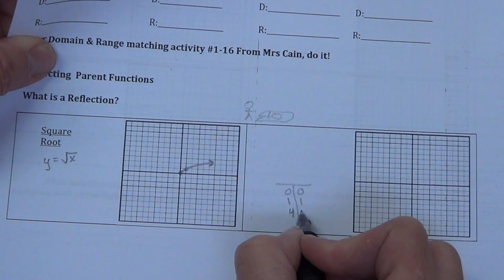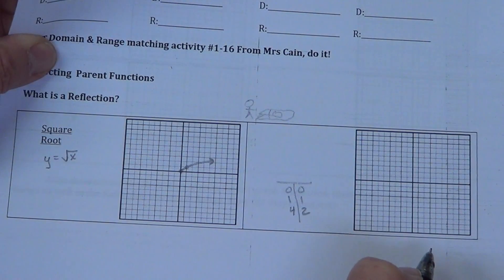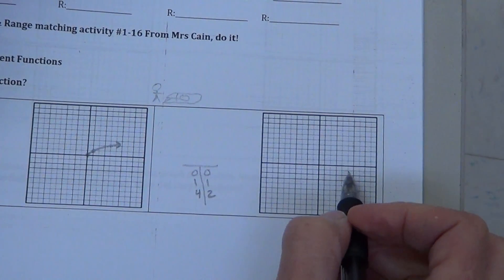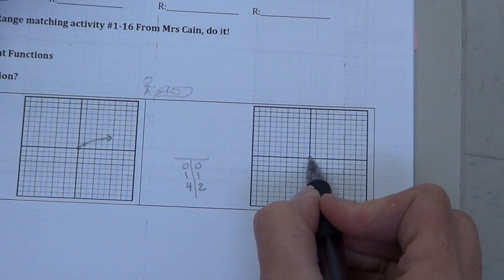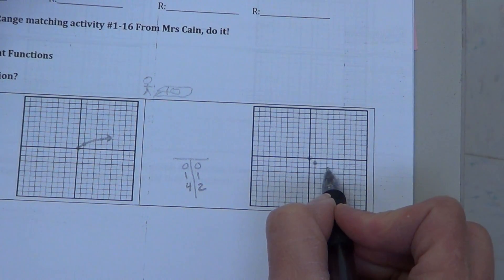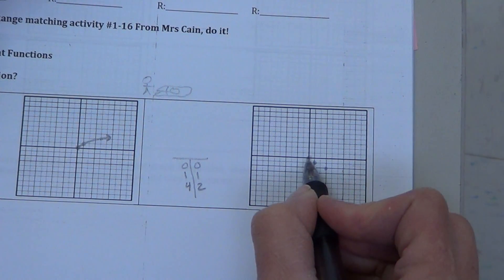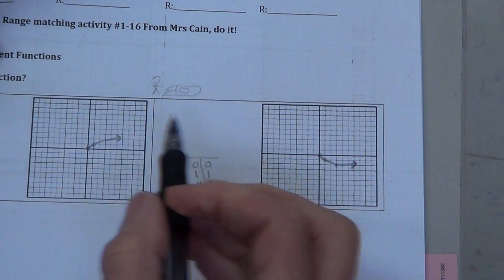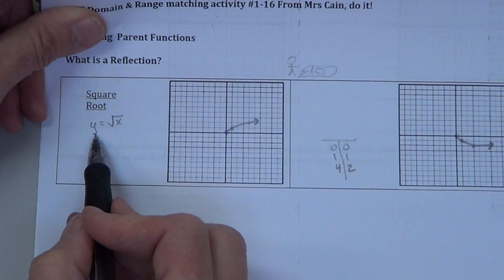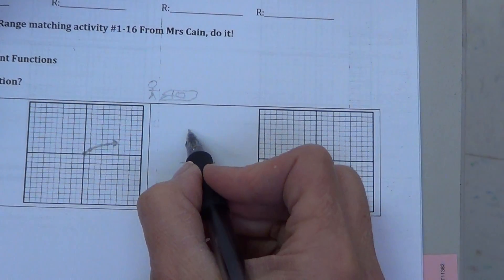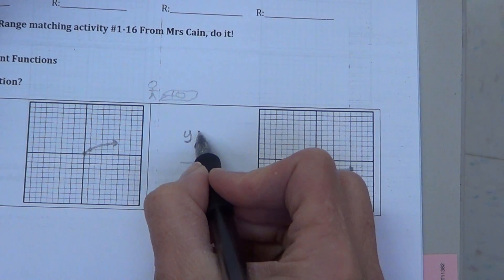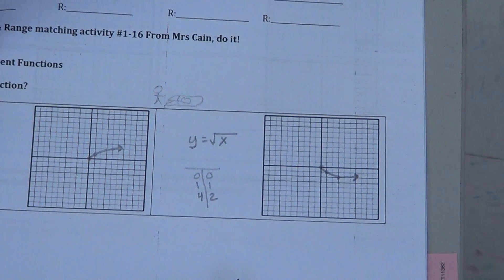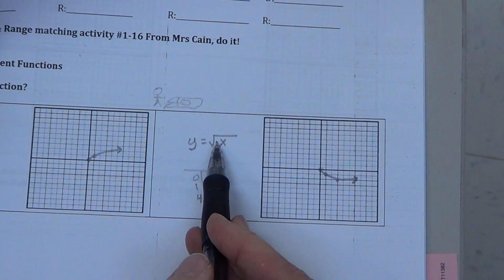And then over here at 4, we had the square root of 4 being 2, and so we had that point. Well, now, we're saying we want this graph to go (0,0), (1, negative 1), and (4, negative 2), so we want to turn that hook upside down. How do we change our equation to get that result? We know we have the shape as a hook, so it's got to go with a square root. If we put a negative in here,